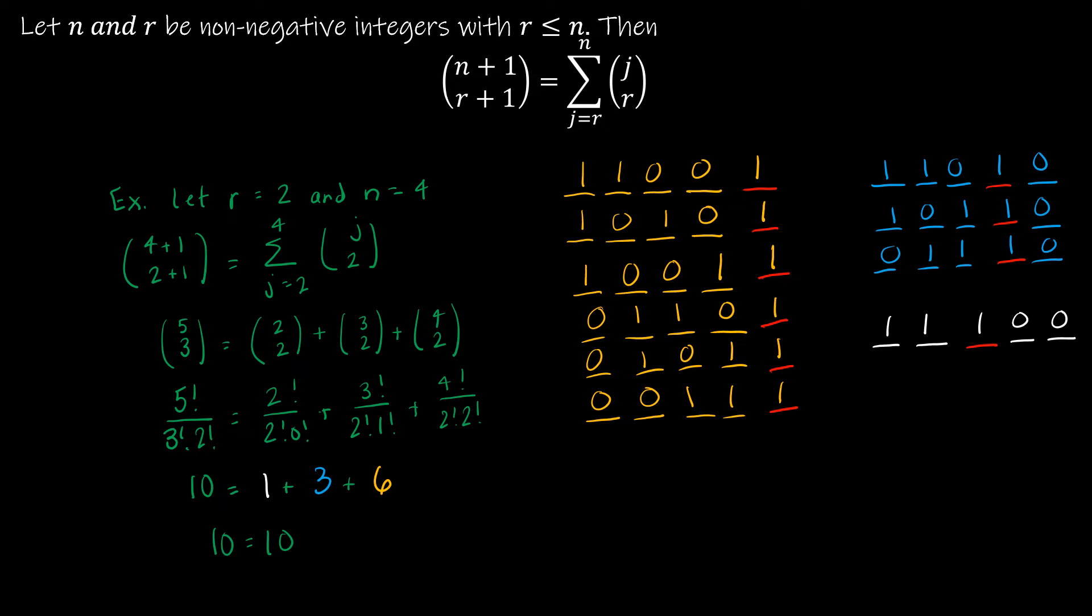And we're choosing to use a bit string example. And you're going to see this quite often in this course when we count the number of bit strings. So again, I have chosen r is 2 and n is 4.